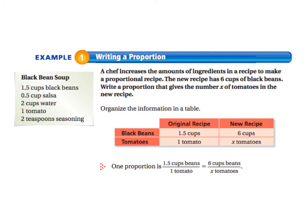So we're going to move on to example one, writing a proportion. A chef increases the amounts of ingredients in a recipe to make a proportional recipe. The new recipe has six cups of black beans. Write a proportion that gives the number x of tomatoes in the new recipe.